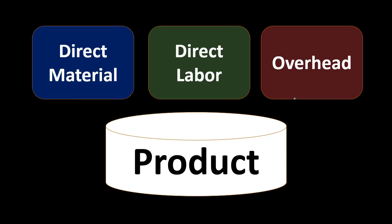The overhead — anything dealing with the factory — will be part of the inventory. If we have depreciation on the factory, maintenance on the factory, or supervisors within the factory paid a salary, all of that is going to be in the inventory in some way and will be part of the product. Anytime we think of inventory, we have direct materials, direct labor, and overhead.